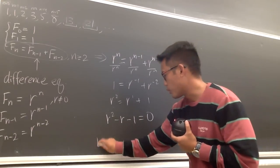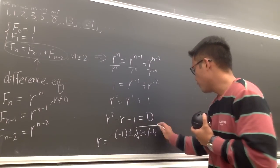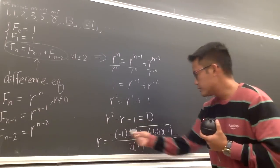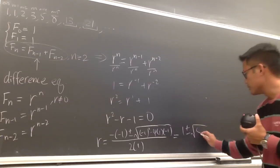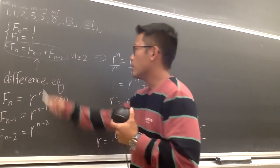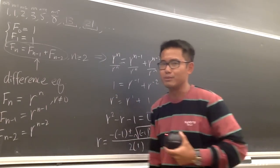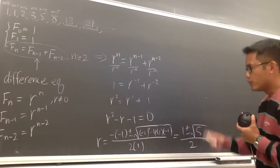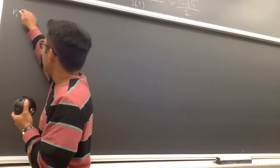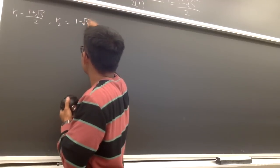I'm going to solve for r using the quadratic formula. r equals negative b — which is negative (−1), so that's positive 1 — plus or minus square root of (−1)² minus 4·(1)·(−1), all over 2 times 1. Simplifying inside the square root gives 5, so r equals (1 ± √5) / 2. That gives us two values: r₁ = (1 + √5) / 2 and r₂ = (1 − √5) / 2.